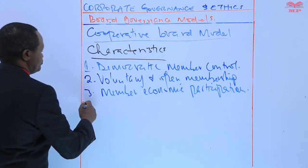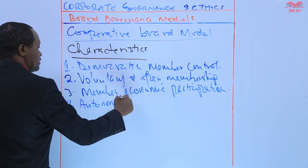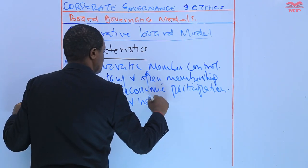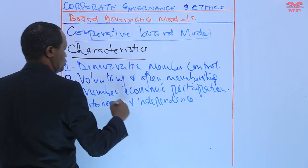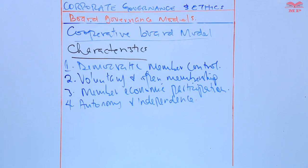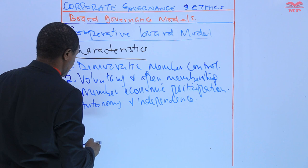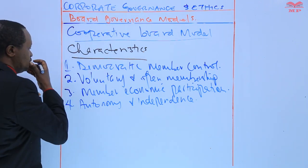Characteristic number four is autonomy and independence. Cooperatives are autonomous entities controlled by their members, and they operate independently from external influences, allowing them to prioritize the interests of their community.